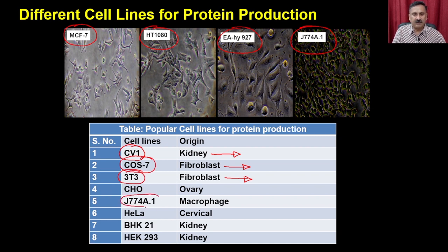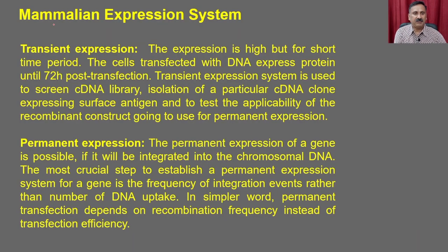You can use J7 and 4A.1, which are macrophage cell lines, and you can use CHO-K1, CB1, and HEK293 — HEK293 is a kidney cell line. Depending on the source of the enzyme, you can choose different options. Sometimes the growth rate and maintenance of these cells are also parameters to keep into consideration.